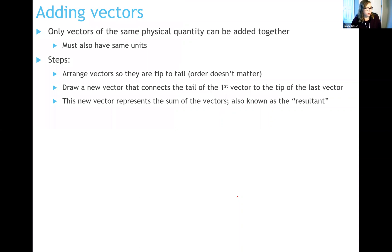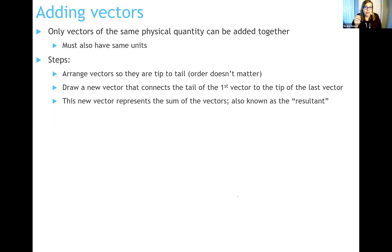The next type of vector operation is vector addition. You can only add vectors together if they have the same physical quantity and the same units. These are the steps: first, assemble your vectors — draw all the vectors you are adding together. Then translate those vectors, meaning you're allowed to pick up a vector and move it as long as you don't rotate it or change its length, arranging them tip to tail. Then draw a new vector connecting the tail of the very first vector to the tip of the very last vector. That new vector is your answer — it's called the resultant.